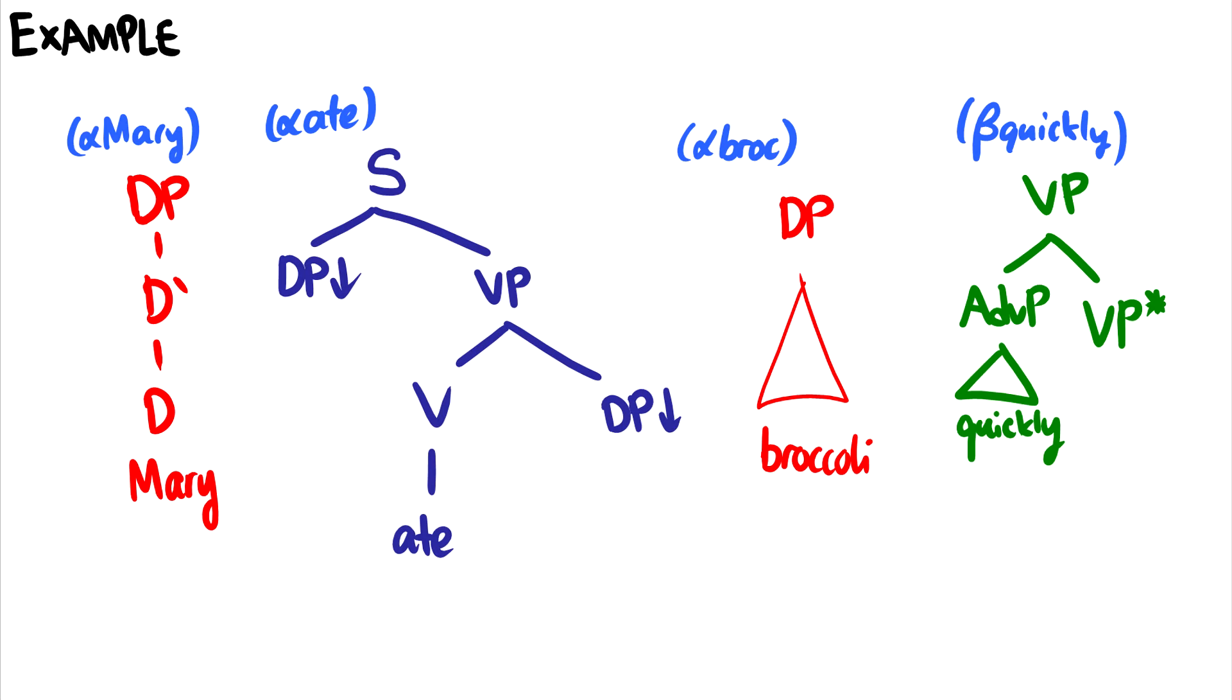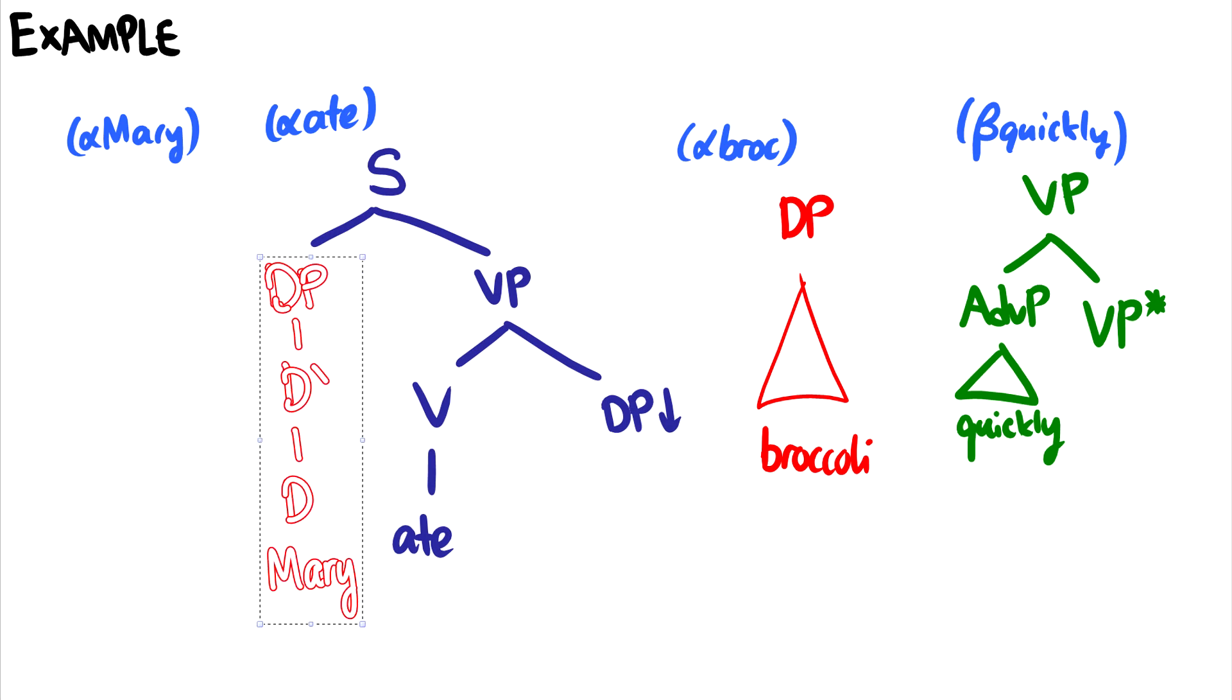So first of all, I want to say Mary ate broccoli, or Mary quickly ate broccoli. So let's put Mary into the subject position. So we simply substitute it in. So I'm actually just going to copy and paste these just to kind of show the substitution there. So there's the substitution of Mary. And I'm just going to erase the alpha Mary tree up top in these labels. So for the derivation tree so far, we can say we have alpha ate, and then we just substituted in alpha Mary into the ate tree.